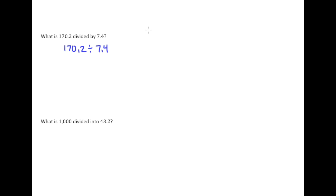This literally means 170.2 divided by 7.4. I can take the first number there when it's written like that, divided by the second number. And we know that we can't have a decimal point in the divisor, so we will move the decimal point 1 to the right in the divisor and 1 to the right in the dividend.